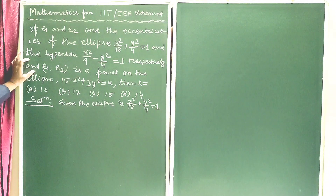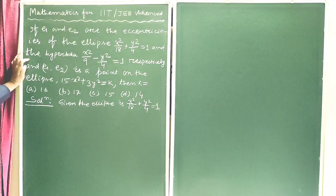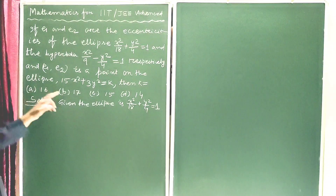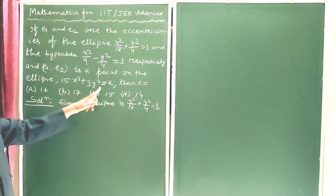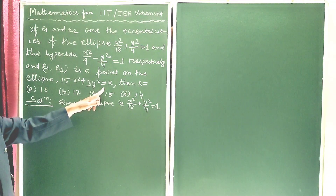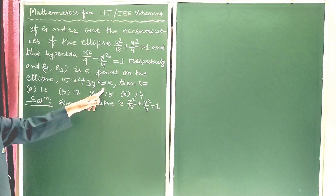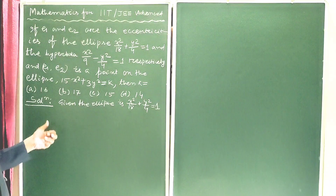and (E1, E2) is a point on the ellipse 15x² + 3y² = k, then k is equal to?